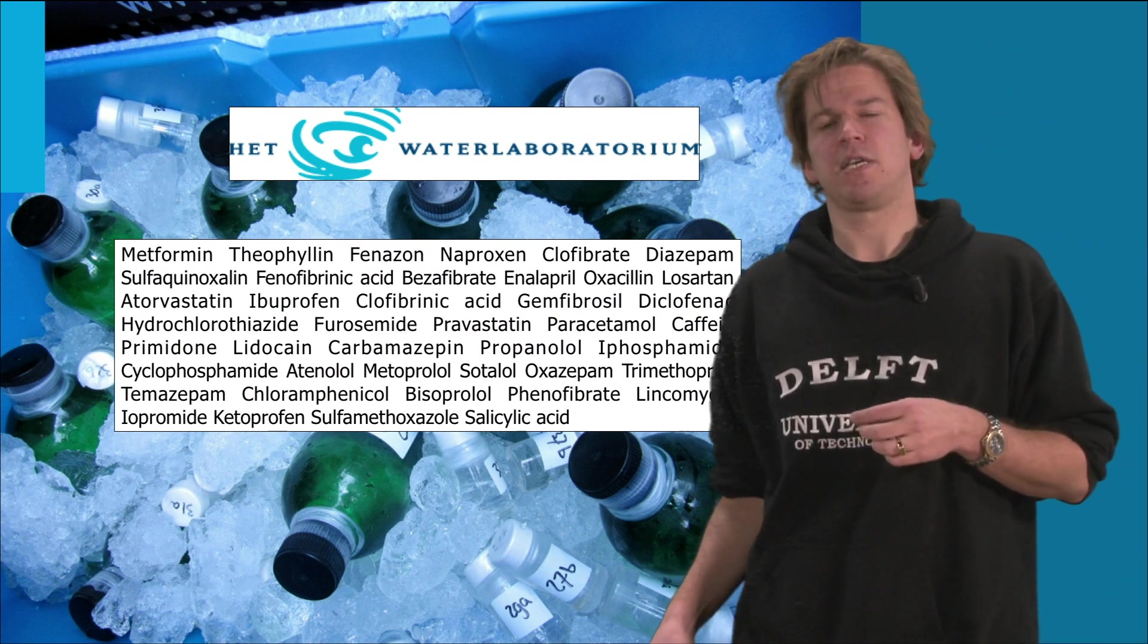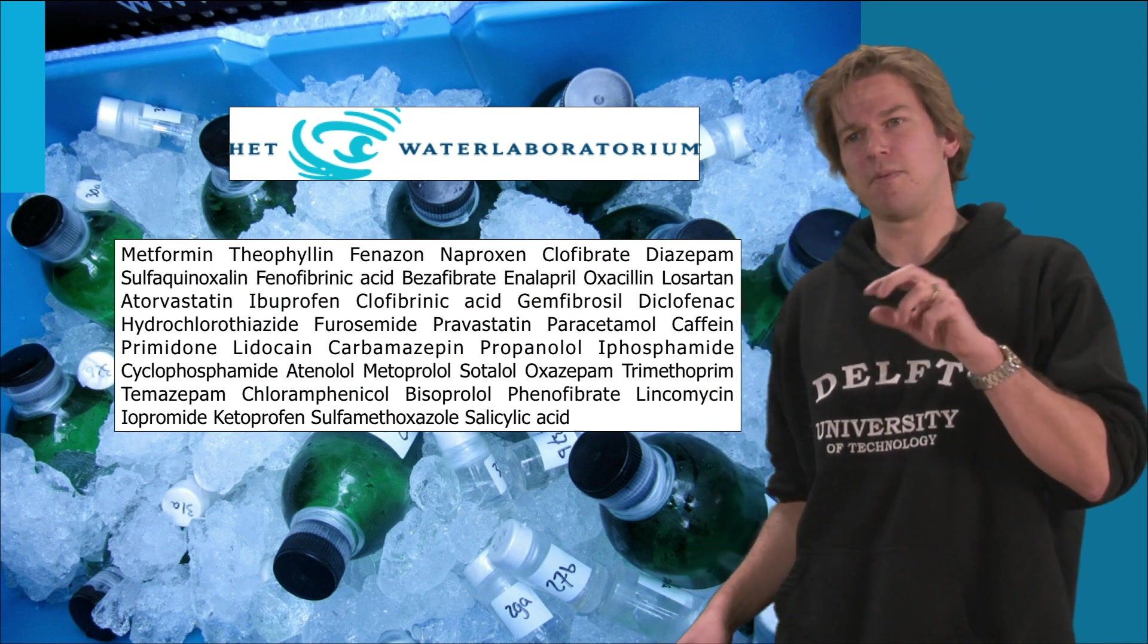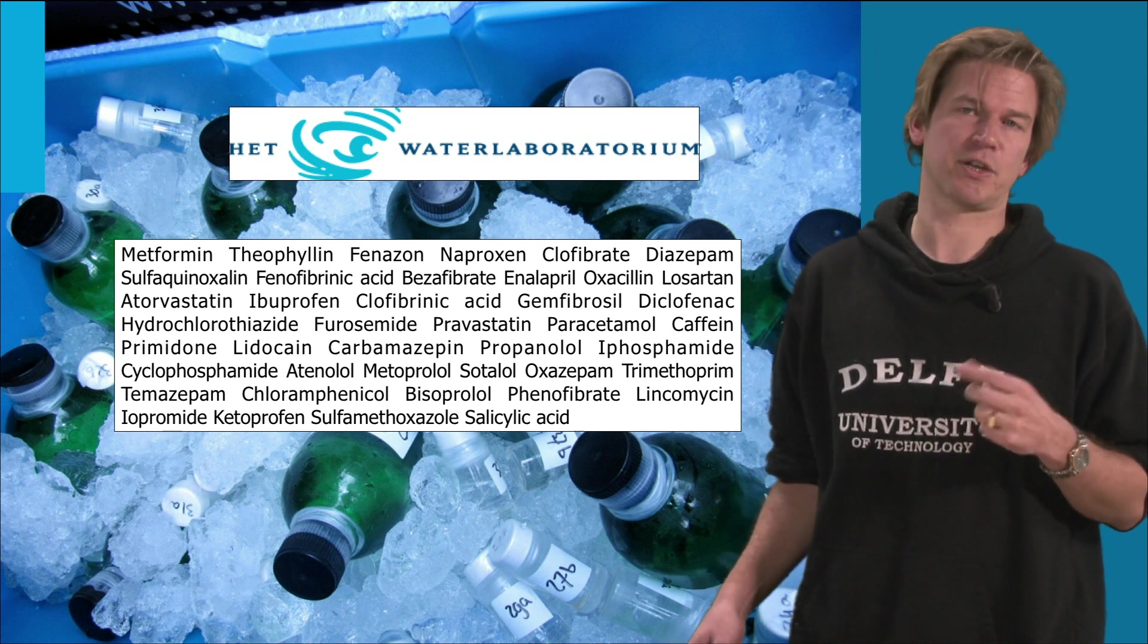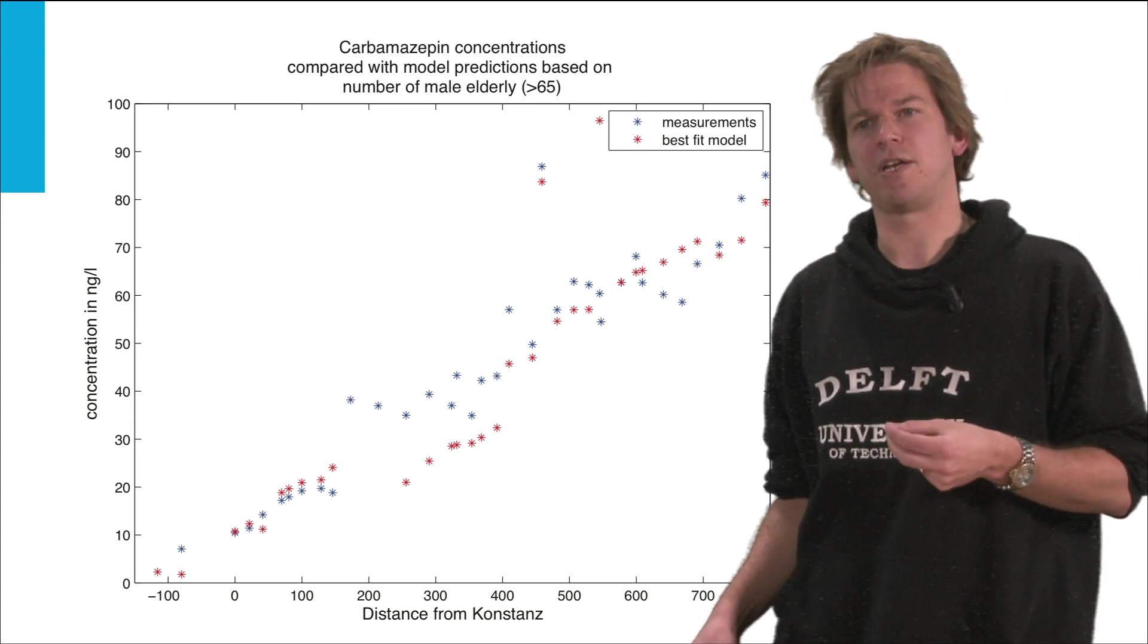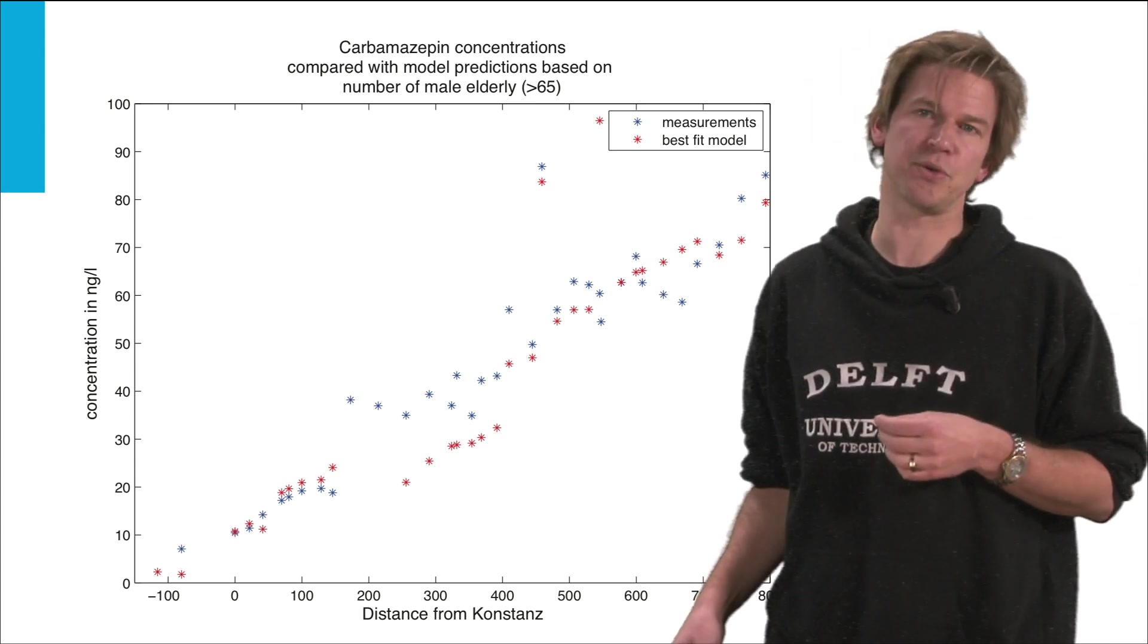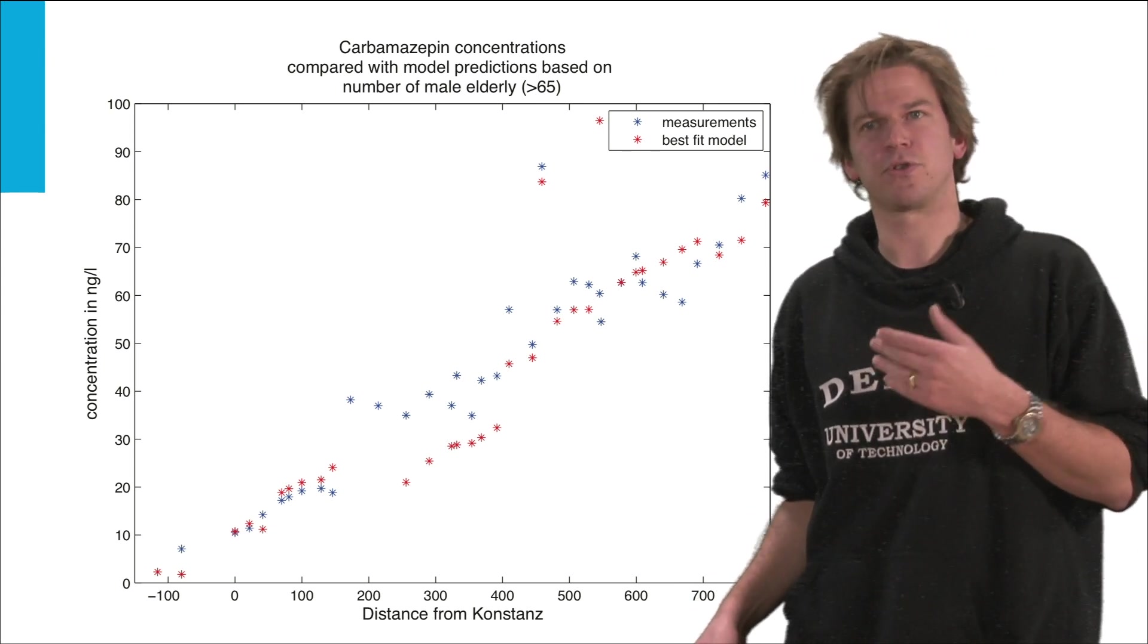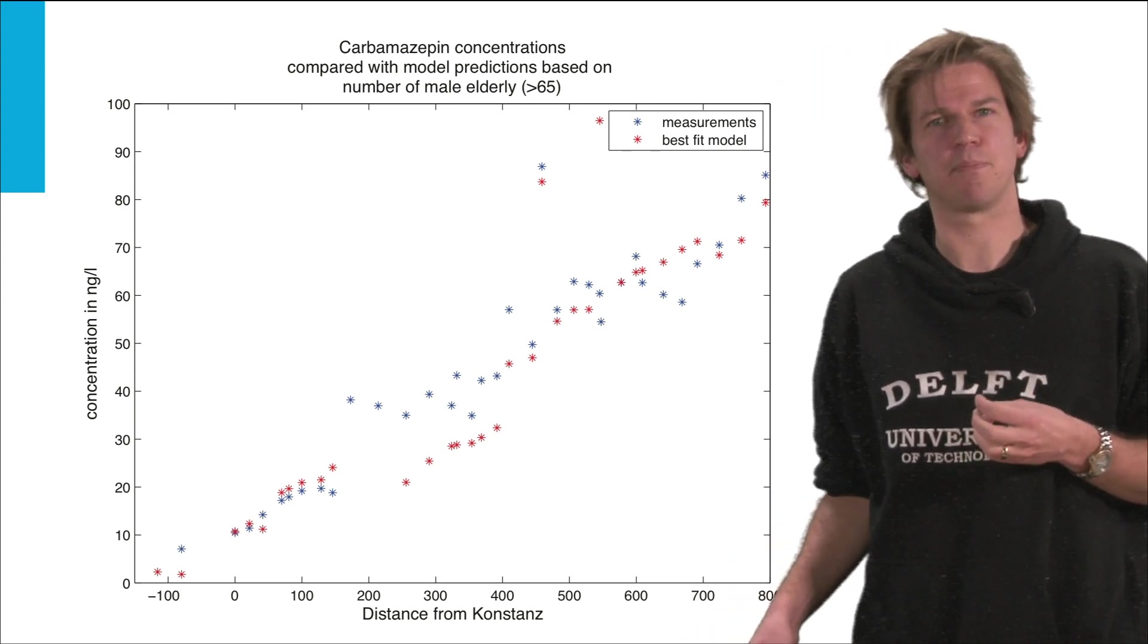For 20 of those 40 chemicals we found a significant relationship between the most contributing demographic group and the pollution. For example carbamazepine shown here has a very high correlation between the measurements we took, the blue dots, and the best fit from our model that uses number of male elderly as an input. The R-square here is higher than 0.98.